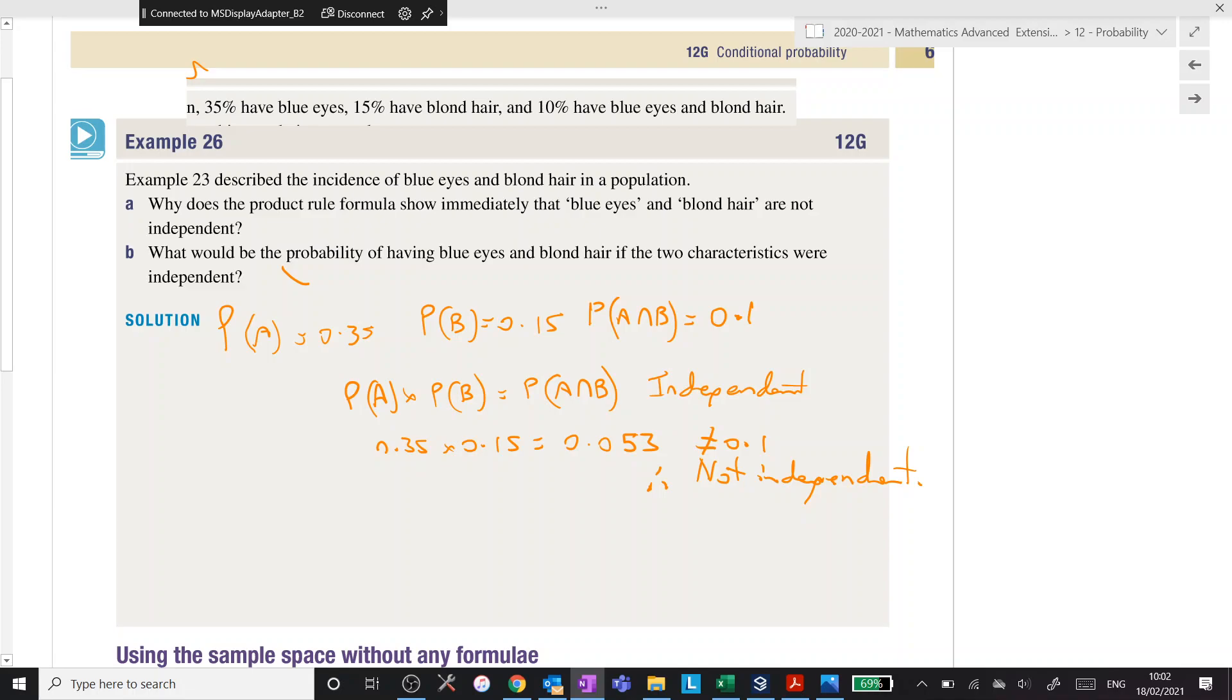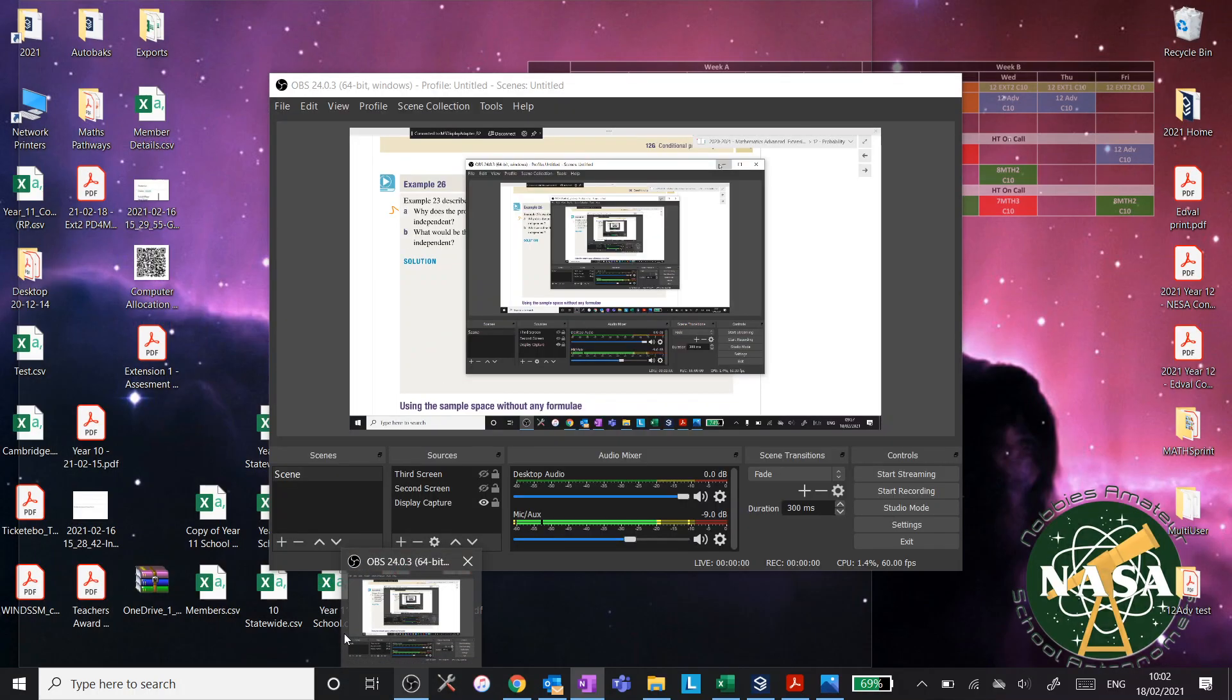What would be the probability of having blue eyes and blonde hair if the two characteristics were independent? Well, you've already done that. It would be 0.053. Yes. Nice conversion there. I'm a fan. We happy with that? So, I will stop the recording on that one.